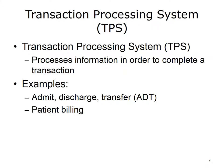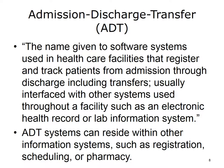A Transaction Processing System, TPS, processes information in order to complete a transaction. Two examples are the Admission, Discharge, Transfer (ADT) and patient billing systems. AHIMA defines an ADT system as software used in healthcare facilities that registers and tracks patients from admission through discharge, including transfers, usually interfaced with other systems such as an electronic health record or lab information system. ADT systems are typically not stand-alone, but rather part of other systems, including pharmacy, registration, scheduling, or lab systems that may have ADT functionality.